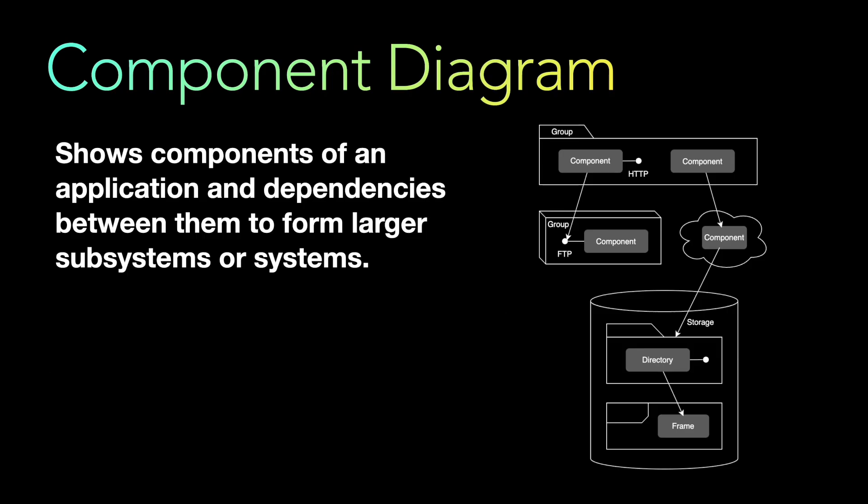The first type is the architecture diagram, also called the component diagram. Component diagrams primarily show the components of an application and the dependencies between them, which form a larger system. It can be a database, multiple services, an async queue, an external system, or a separate cloud system — any components within your entire architecture.